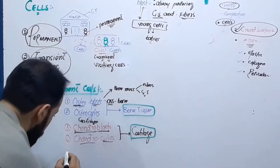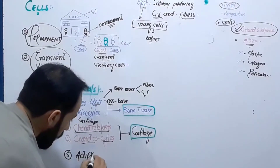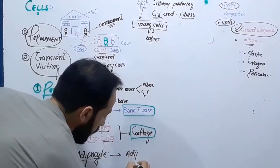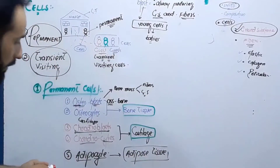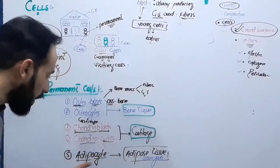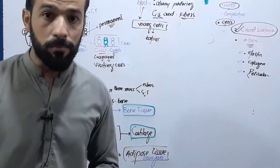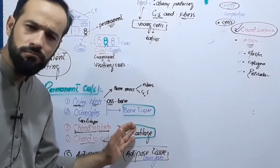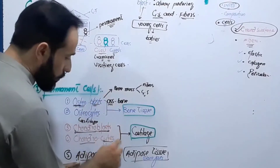The next group of cells which are permanent residents — permanently living in the connective tissue — are called adipocytes. 'Cyte' means cells and 'adip' means adipose tissue. Adipose tissue is another type of connective tissue present in our body, and these are the tissues which store fats. The fat cells are called adipocytes, and they store fats inside their cytoplasm and cell membrane.